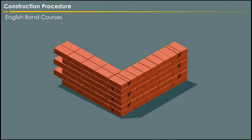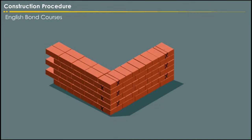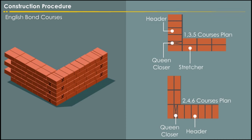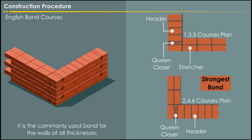English bond courses consist of headers and stretchers. This is considered to be the strongest bond. Hence, it is the commonly used bond for the walls of all thickness.